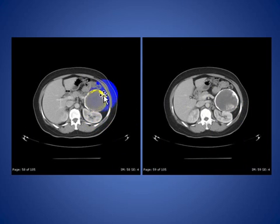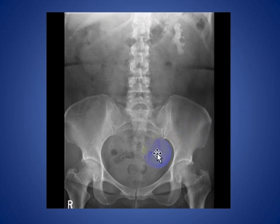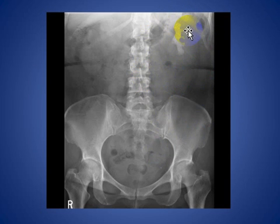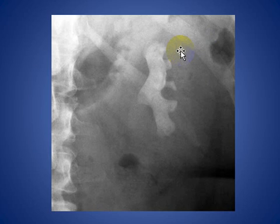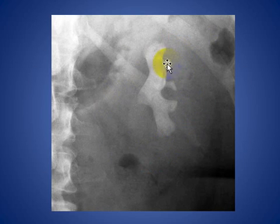Here you see calcification in a cyst outside the kidney. This is a calcified hydatid cyst. Here you see an abdomen X-ray in a female patient with a large stone involving the left kidney, called a staghorn calculus. This is a magnified view of the staghorn calculus involving the left kidney.